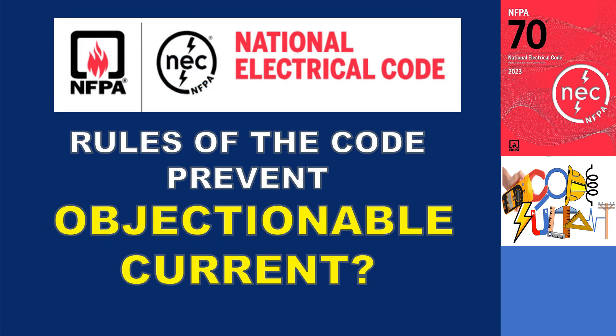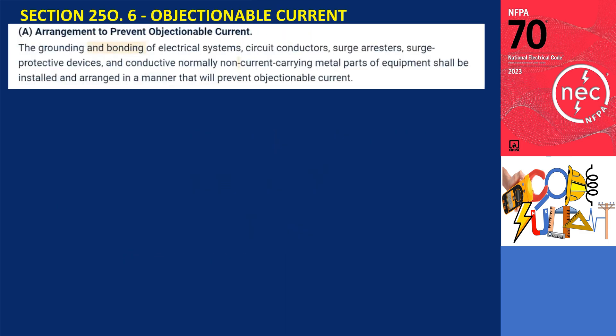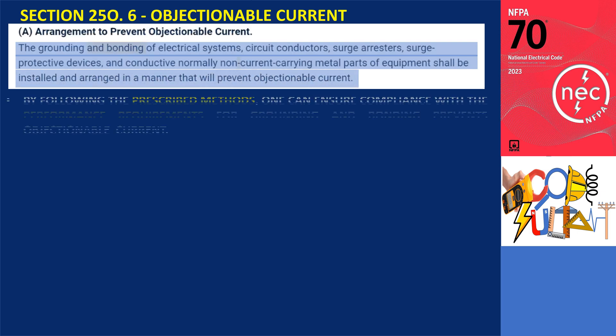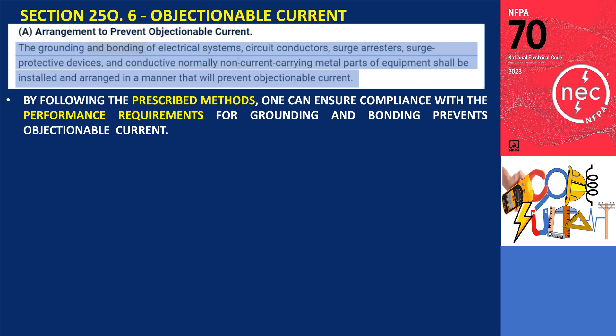The National Electrical Code has rules and guidelines in place to prevent objectionable currents and ensure safe electrical installations. Section 250.6A of the NEC provides specific guidance on how grounding and bonding should be arranged to prevent objectionable currents. This section states that the grounding and bonding of electrical systems, circuit conductors, surge arrestors, surge protective devices, and non-current carrying metal parts of equipment should be installed and arranged in a manner that prevents objectionable currents. Following the prescriptive method for grounding and bonding as outlined in Article 250 of the NEC can help prevent objectionable currents from occurring.